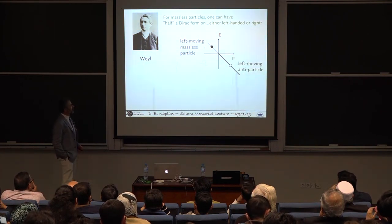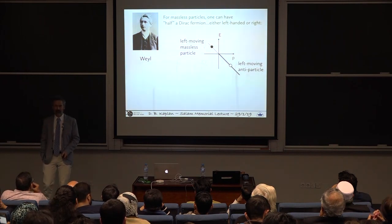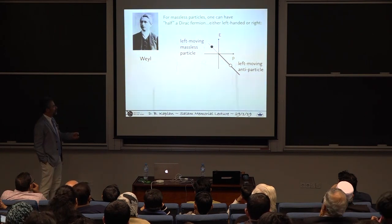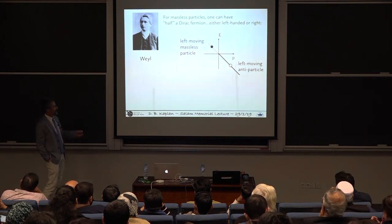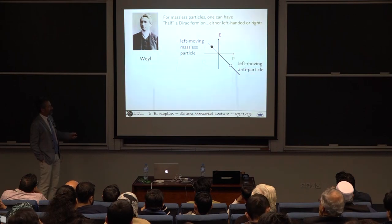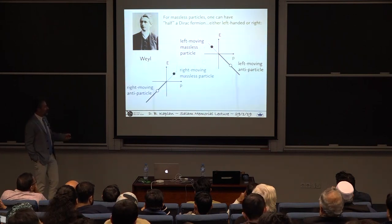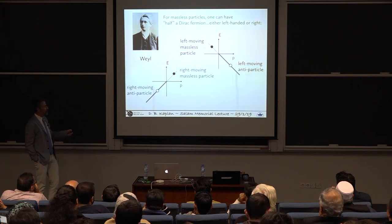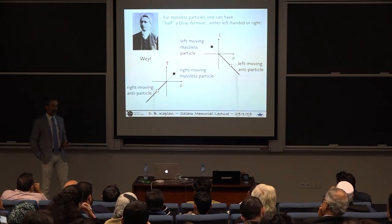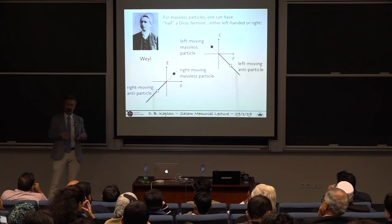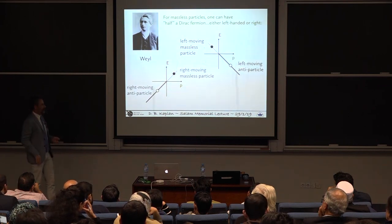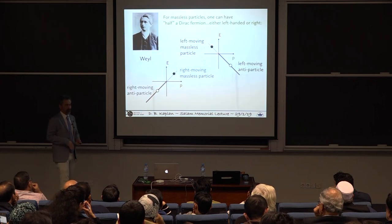Now, years later, Hermann Weyl noticed that you could actually talk about half of a Dirac fermion, which is you could have, if you had a massless fermion, instead of having the whole both positive and negative momentum, you could have just this part of the spectrum here with a particle here which is only moving to the left, or an antiparticle which is also, it turns out, is only moving to the left. Or you could have this type of fermion which is only moving to the right. You don't have to have both of them.